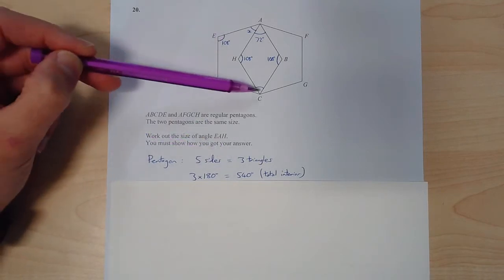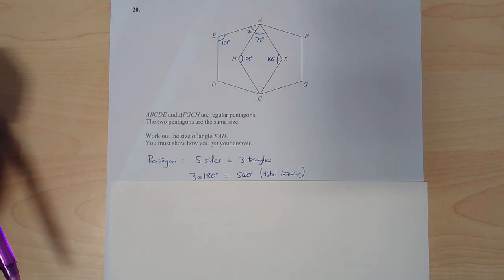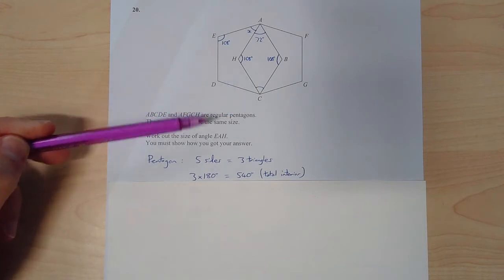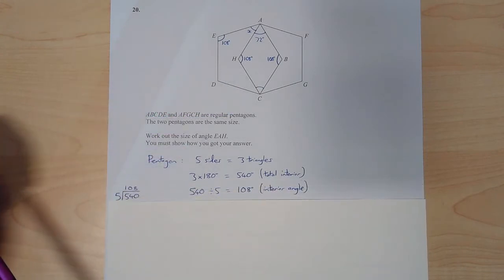So 1, 2, 3, 4, 5. All of those add up to 540. I can then use that information of it being a regular pentagon to then work out what one of the angles are because they're all the same. 540 divided by 5 is 108.